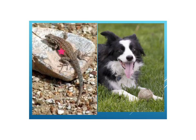Here's an ectotherm such as a lizard — he's going to sit on a rock warmed by the sun, and that's how he increases his body temperature if it gets too low. And then here is our dog — he's going to pant. Panting in dogs is a way for them to drop their body temperature; they're bringing cool air in from the environment and it's cooling off their body. The dog, remember, is an endotherm.